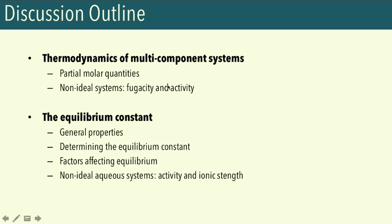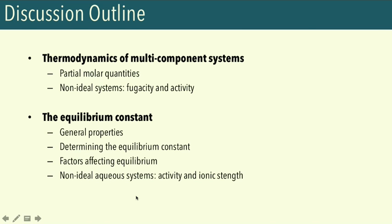Overall, our initial introductory discussion on the thermodynamics of multi-component systems will allow us to derive an equation that will be very useful when we consider chemical equilibrium. It will also lead us to the concept of the equilibrium constant, which helps us predict properties and changes in chemical equilibrium systems. Mostly we'll talk about ideal systems, but in the latter part we'll discuss non-ideal systems, particularly systems involving ionic equilibria.